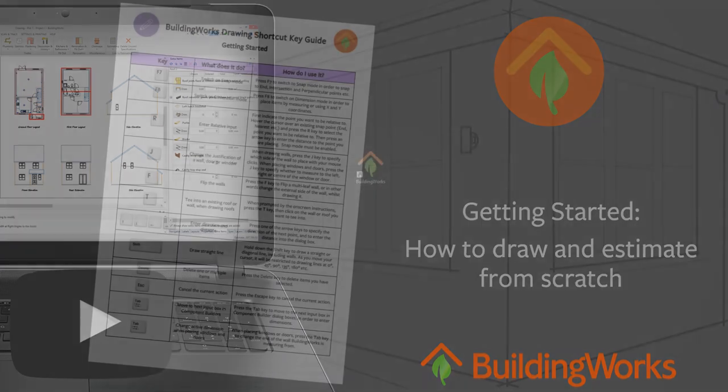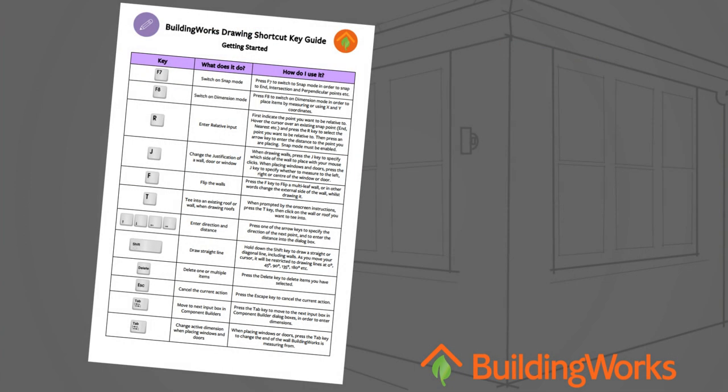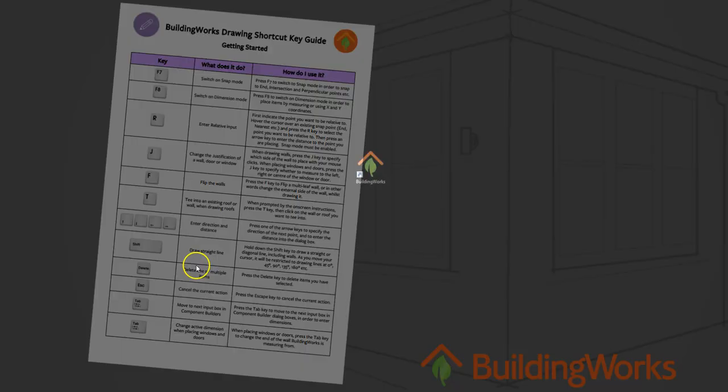You'll find it helpful to have a copy of the BuildingWorks shortcut key guide next to you to help with drafting your plans. You can find a link to this guide underneath the how to draw and estimate from scratch video on the BuildingWorks support site.